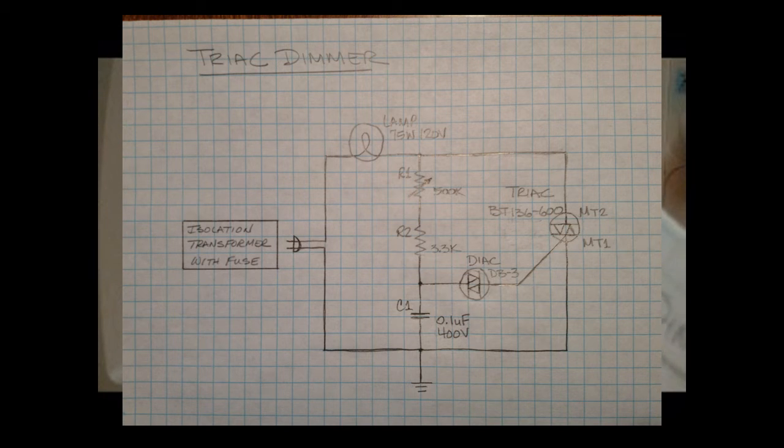You'll see I'm plugging into an isolation transformer with a fuse. I would certainly recommend doing something like this if you intend to put a scope on this or anything like that to look at what's going on in this circuit. But you'll see we have a lamp that's tied in and this would actually be coming off the plug, this would be the white wire going to probably the silver connector on the back of the lamp.